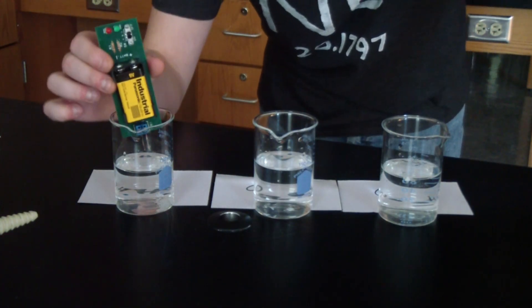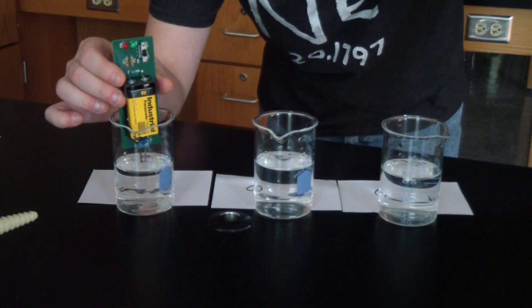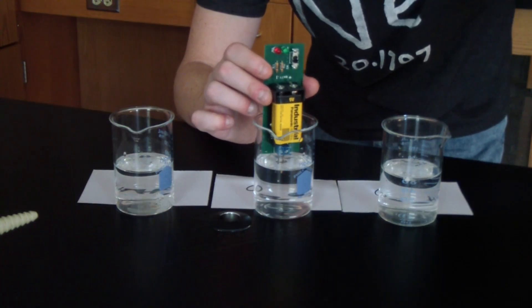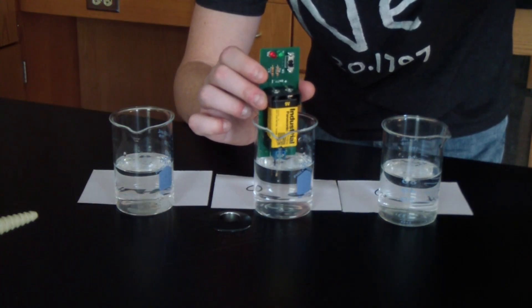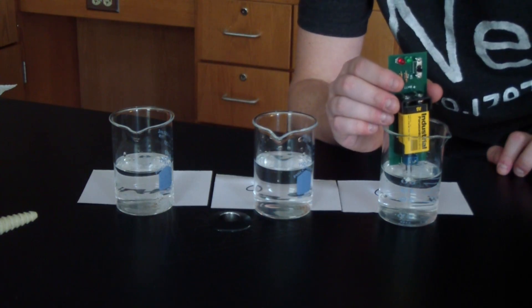So this first one here is something called P-dichlorobenzene, which is used in mothballs. And you can see that this one doesn't conduct electricity. Sugar, or sucrose, also does not conduct electricity. And wax also does not conduct electricity.